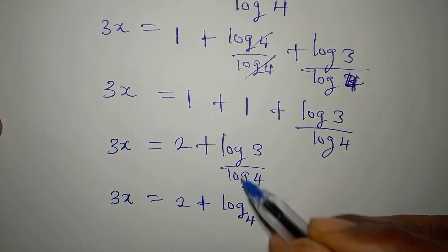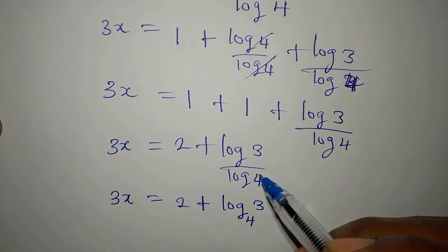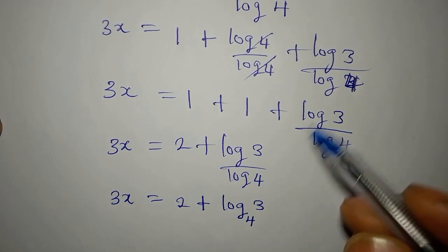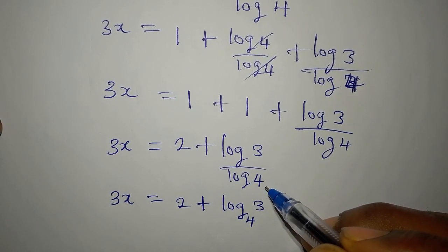Since log 3 and log 4 have the same base, which is base 10, we can change the base and write this as log 3 to base 4.